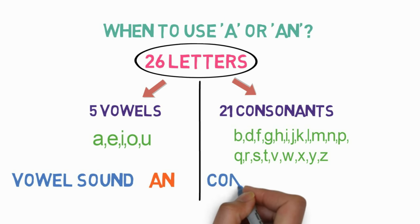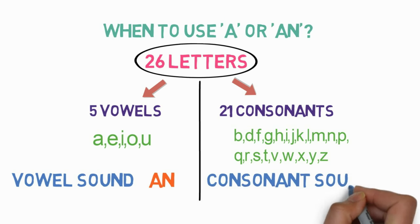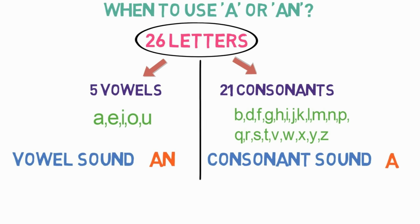If a word begins with a vowel sound, 'an' is used. If a word begins with a consonant sound, 'a' is used. Please note, we have to check the vowel sounds and consonant sounds, not just the letters. Let's look at examples where we use 'an' before a word.